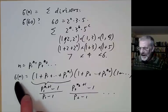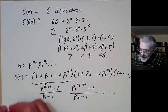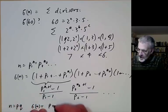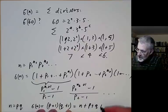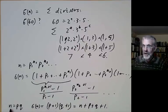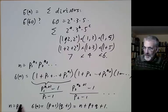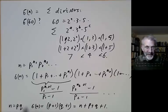More generally, if n = p₁^n₁ × p₂^n₂ × ···, then σ(n) = (1 + p₁ + ··· + p₁^n₁)(1 + p₂ + ··· + p₂^n₂)···. Each factor is a geometric series: (p₁^(n₁+1) − 1)/(p₁ − 1), and similarly for the others. In fact, working out σ(n) is about as difficult as finding the prime factorization — if n is a product of two primes p and q, knowing σ(n) lets you recover p + q and hence solve for p and q.